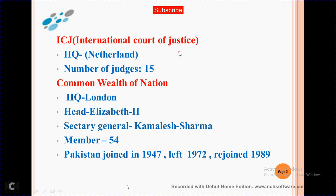ICJ — International Court of Justice — headquarters in the Netherlands, with 15 judges. Commonwealth of Nations: headquarters in London. Head: Queen Elizabeth II. Secretary General: Kamlesh Sharma. Members: 54. Pakistan joined in 1947 for the first time, then in 1972 it rejoined, and 1989 as well.